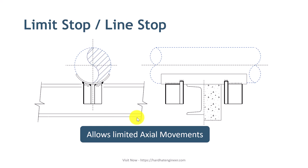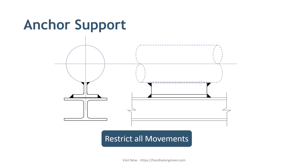Now let's see the function of an anchor in the pipeline. As the name suggests, an anchor restricts all three types of movement in the pipeline at a given point. An anchor aims to divide a pipeline into individual expanding sections. Anchor design should consider all kinds of loads that may occur in the pipeline to withstand any condition that arises during operation. Here in the image you can see that both primary and secondary supports are welded so that the pipe will not move. The primary support is directly connected to the pipeline, and the secondary support is what the primary support rests on. Together they completely stop the movement of the pipe in any direction.